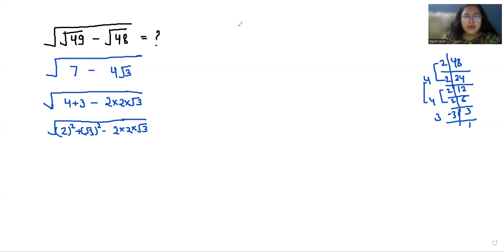Now it becomes a very famous identity that is a² + b² - 2 times a times b, where a is 2 and b is √3, and this equals (a - b)². So here we can write this as (2 - √3)².